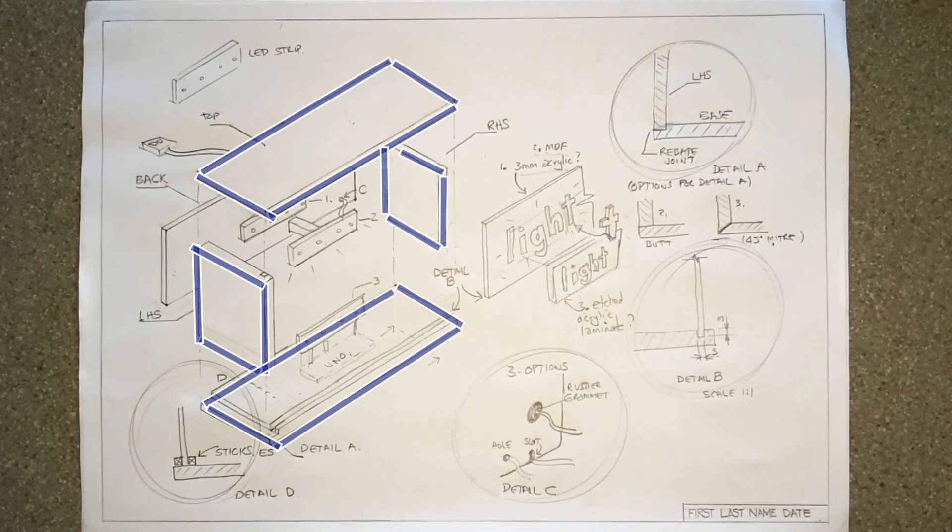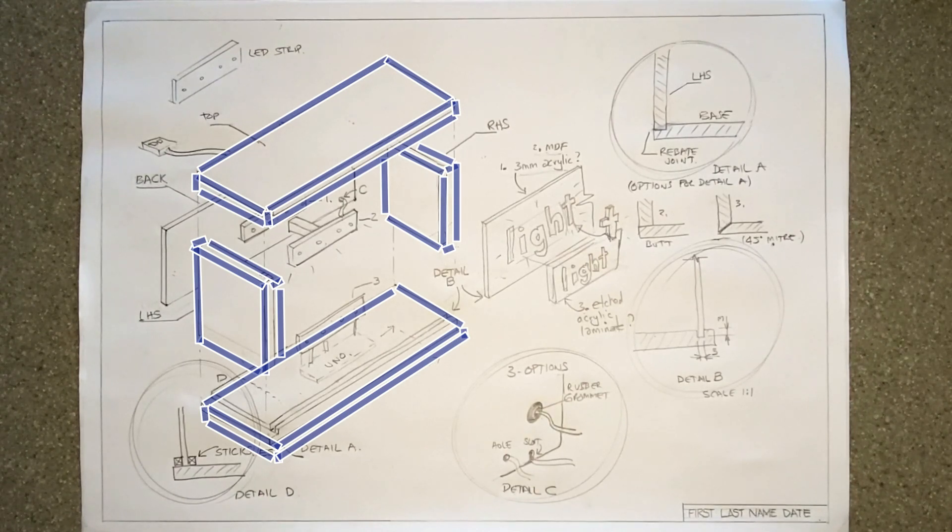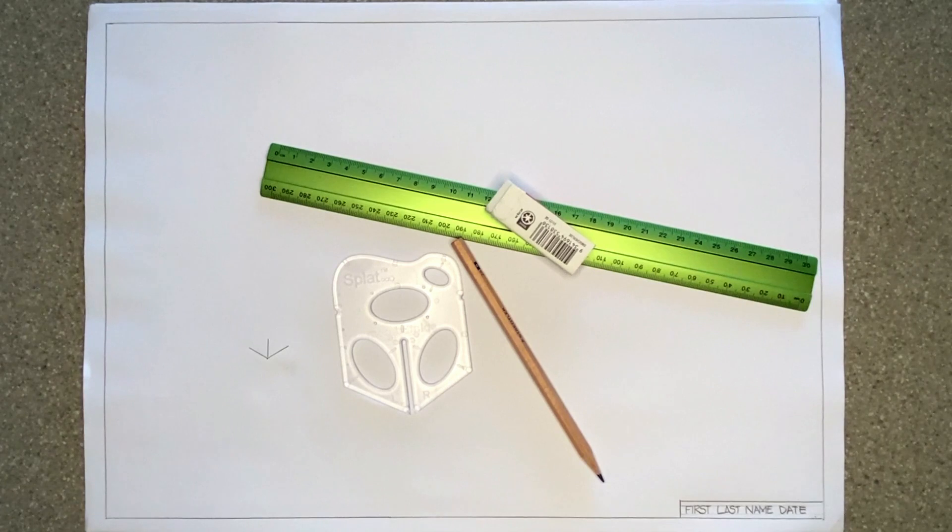We'll begin very simply by drawing flat planes, isometric planes. Then we'll add some thickness, and after that, some design detail and annotation. Remember this is quick sketching. If you don't have a splat, it's fine. Just guess the angles and follow along.